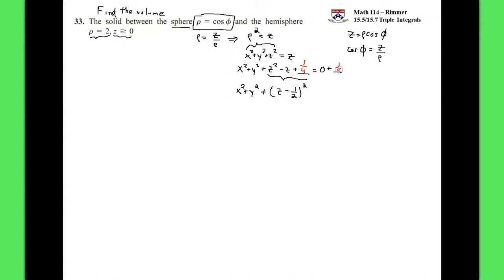Balance it out, add it to the other side, and we have exactly that the sphere is centered at zero for x, zero for y, and a half for z. The center of the sphere is (0, 0, 1/2), and the radius of the sphere is also a half, the square root of the right-hand side.